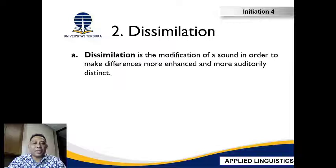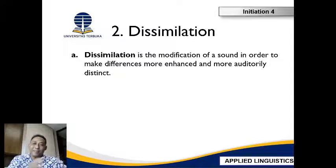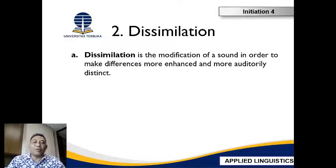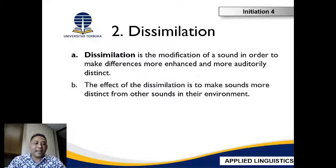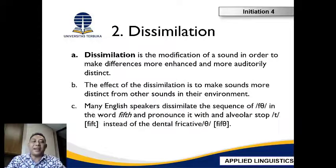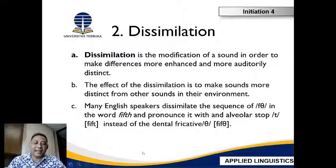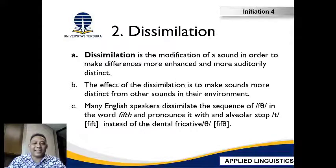Dissimilation is the modification of a sound to make it more different — more auditorily distinct from other sounds in the environment. The effect of dissimilation is to make sounds more distinct from surrounding sounds. For example, in the word 'fifth' — you don't just say 'fifth,' there's a small sound adjustment that makes it more distinct.